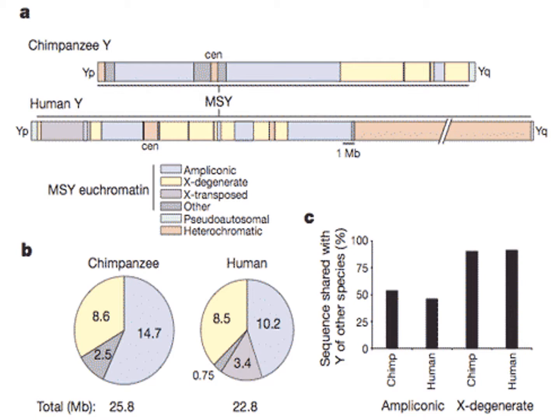Even among the genes themselves, if one thinks a 6% overall difference is impressive when it comes to autosomal-chromosomal differences, what about a difference of 30% or more? Surprisingly, a study published by Nature in 2010 showed that the Y chromosome is very different between humans and apes.